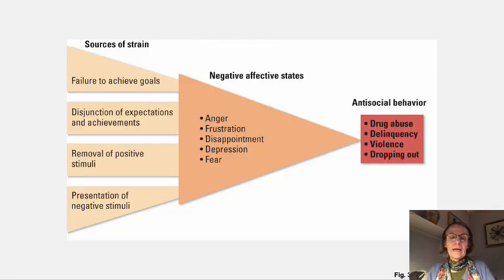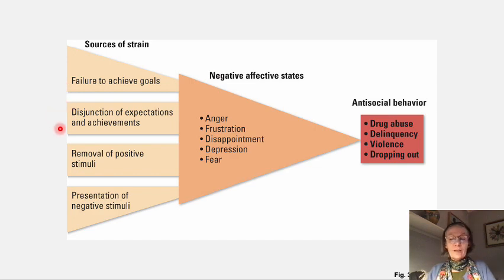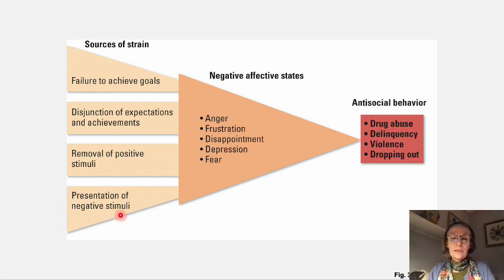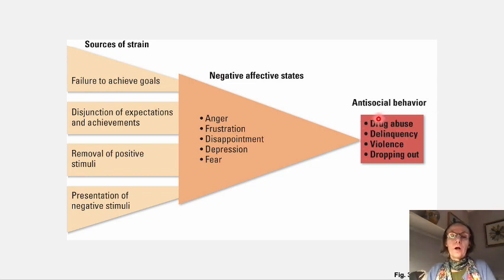Here is a figure from your textbook that illustrates strain theory. On one side you see the sources of strain: failure to achieve goals, a disjunction between expectations and achievement, removal of positive stimuli, and presentation of negative stimuli within a disorganized neighborhood. These lead to anger, frustration, and disappointment, which can result in antisocial behaviors like delinquency, violence, dropping out, and drug abuse.